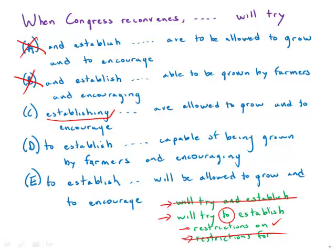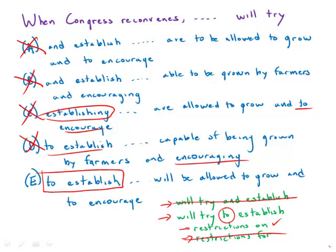In answer choice C, we have 'establishing' and 'to encourage' — that's not parallel. In D, we have 'to establish' and 'encouraging' — also not parallel. So in E, we have 'to establish' and 'to encourage' — perfect parallelism. We also have 'restrictions on,' which is correct.